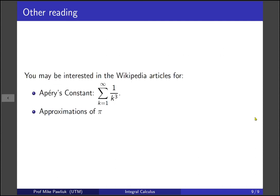And then finally some other reading that you might be interested in. There are two Wikipedia articles related to this. One is about Apéry's constant, so this is about the value of the sum of 1 over k cubed, not k squared, which is what we looked at today. And approximations of pi is a really nice article for historically and in modern times, how do people find the decimals of pi. Thank you very much and have a great day!